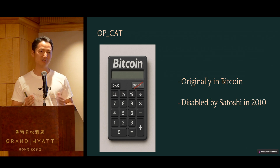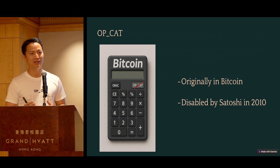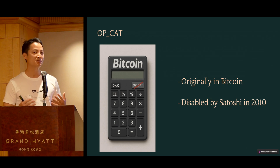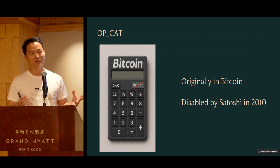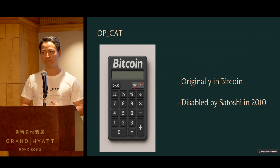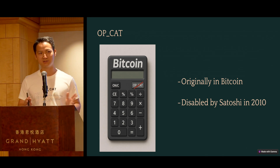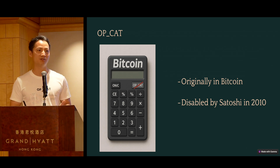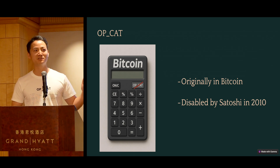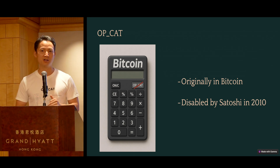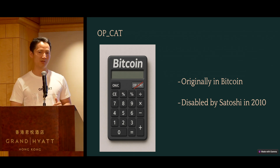About one year later, he disabled it — most likely for security reasons — along with a bunch of other OpCADs. In total, Bitcoin Script has about 128 OpCADs or so, and about 10 of them got disabled. OpCAT is the most interesting and most powerful OpCAD among all those 10 disabled opcodes.